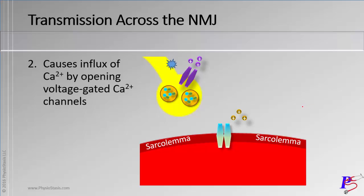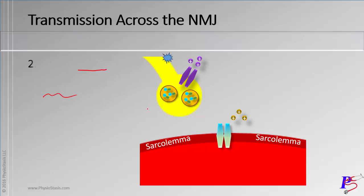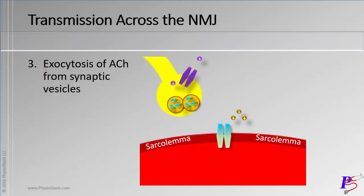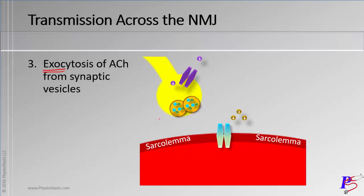Step two: the action potential reaches the voltage-gated calcium channel and calcium comes in — an influx of calcium, opened by the voltage. Step three: this influx of calcium is important because it causes the exocytosis of acetylcholine into the synaptic cleft. Calcium causes the synaptic vesicles to release. In cell biology terms, calcium interacts with the SNARE proteins on the vesicles, causing exocytosis of the neurotransmitter.